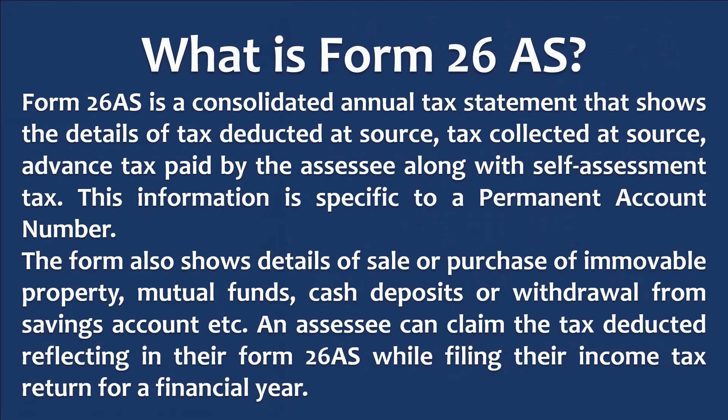Let's understand 26AS first. Form 26AS is a consolidated annual tax statement that shows the details of tax deducted at source, tax collected at source, and advance tax paid by the assessee along with self-assessment tax. This information is specific to a permanent account number. The form also shows details of sale or purchase of a movable property, mutual funds, cash deposits, or withdrawal from savings account. An assessee can claim the tax deducted reflecting in their Form 26AS while filing their income tax return for a financial year.